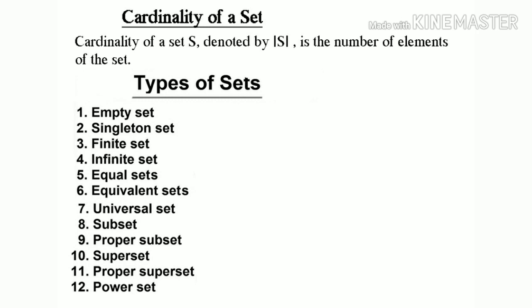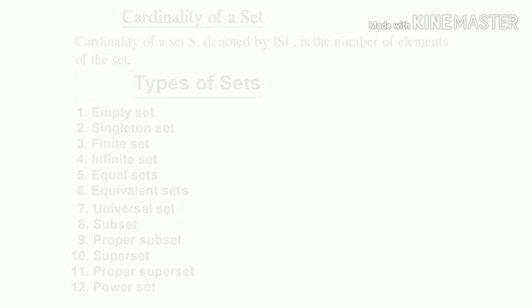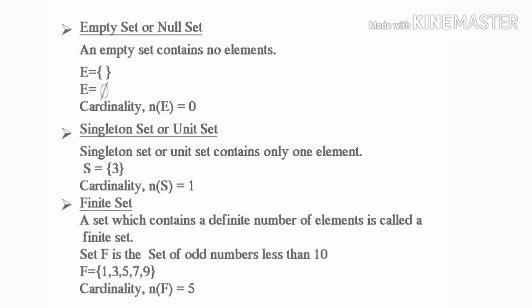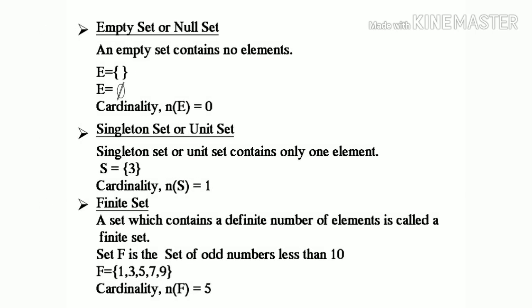Cardinality of a set, denoted by |S|, is the number of elements of the set. Now let us talk about types of set. First one is empty set or null set. An empty set contains no element. E equal to null set. Therefore, cardinality n of E equal to 0.